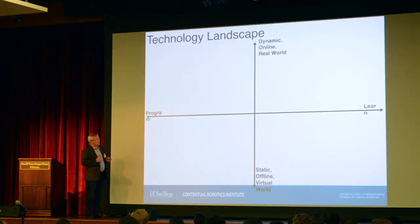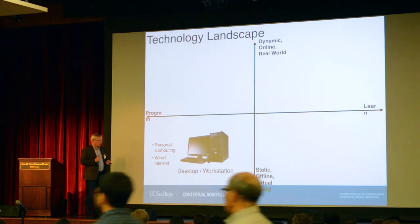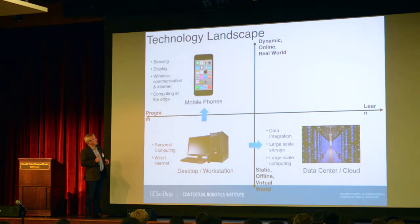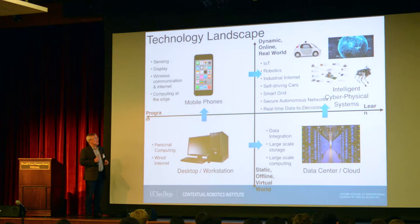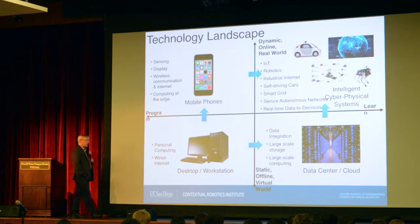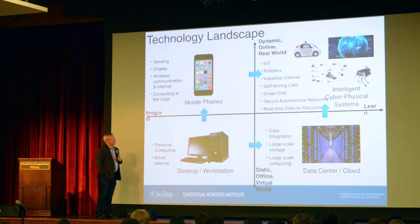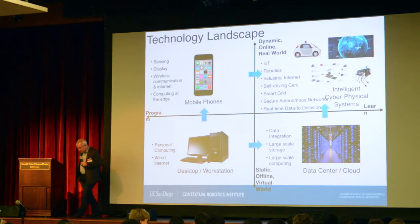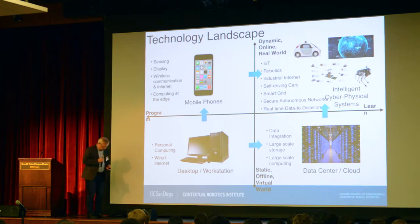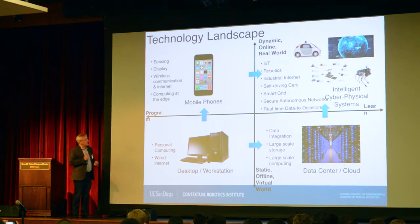We do a number of different things. We come from a world where we think about the static world, and we've gone into a world where we do mobile devices. The really interesting problems for us are what happens when we can do massive amounts of data on mobile devices in a highly dynamic world. We're thinking about this primarily in three different application areas: what can we do to build truly autonomous systems, and what can we do to build systems that assist people in daily lives.